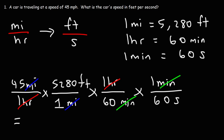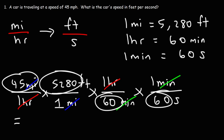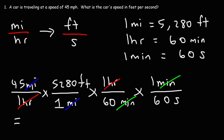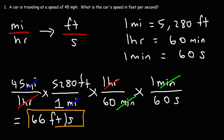Now we need to do the math. We're going to multiply by the numbers in the numerators of the fractions and divide by the numbers in the denominators. So it's going to be 45 times 5,280, divided by 60, and then take that result and divide by 60 again. This gives us 66 feet per second. That's how you convert from miles per hour to feet per second.